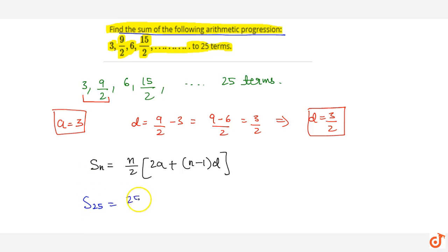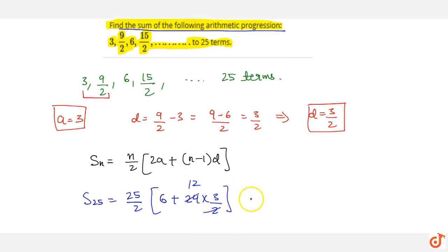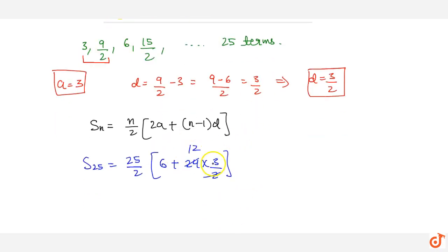So S_25 equals 25 by 2 times, where a equals 3, so 2 into 3 is 6, plus 25 minus 1 is 24, into 3 by 2. This becomes 6 plus 36, which equals 42.